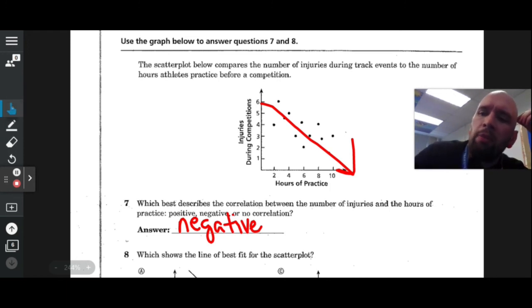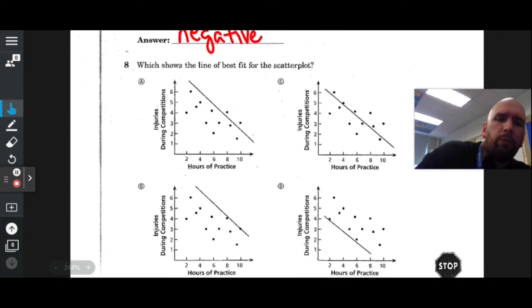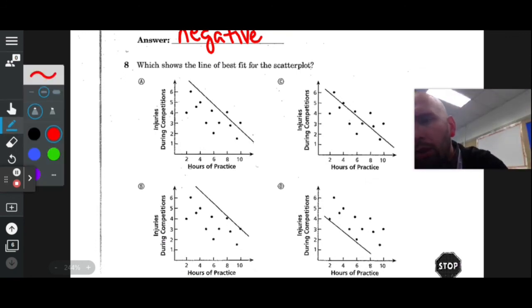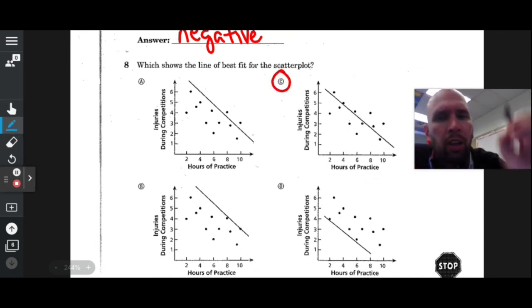Which shows the line of best fit? The one smack dab in the middle. The line is supposed to fit in the middle as nicely as humanly possible, and that's what C does. A is too far up, B is above every number, D is below every number. C is just right.